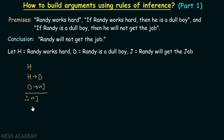We can see that this argument is not in the form of any of the rules of inference studied in the previous lecture, because here we have three premises and one conclusion. The rules of inference we already learned have either two premises and one conclusion, or one premise and one conclusion.